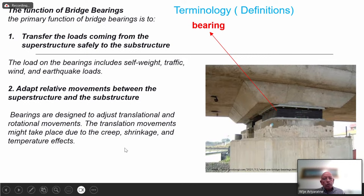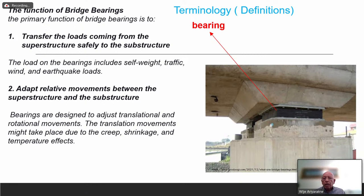For concrete bridges particularly, you have creep. Once the concrete is stressed it will start to creep and shrink, causing shortening longitudinally. The bearing must accommodate that translational movement. So the bearing should be capable of both translational and rotational movements.